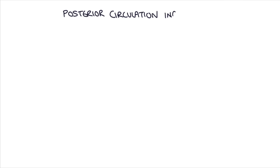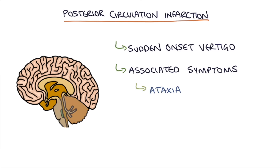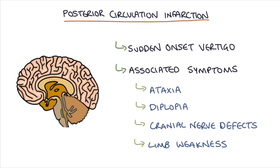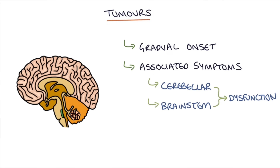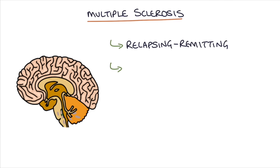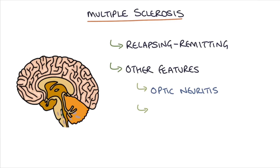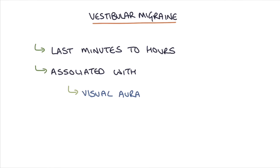Patients with posterior circulation infarction will have a sudden onset of vertigo that may be associated with ataxia, diplopia or double vision, other cranial nerve defects or limb weakness. Tumours in the cerebellum or brain stem will have a gradual onset with associated symptoms of cerebellar or brain stem dysfunction. Multiple sclerosis may cause relapsing and remitting symptoms with other features such as optic neuritis or transverse myelitis, and vestibular migraine will cause symptoms lasting minutes to hours, often associated with visual aura and a headache.